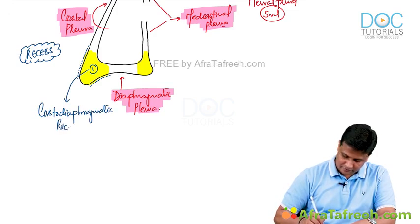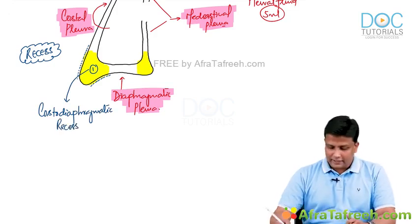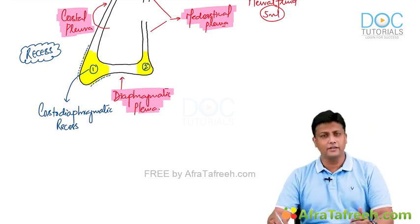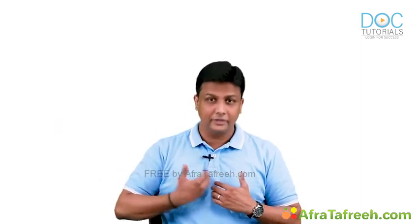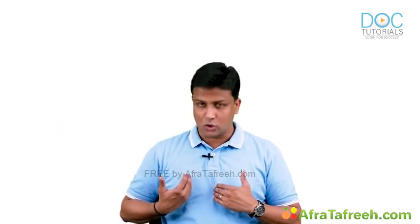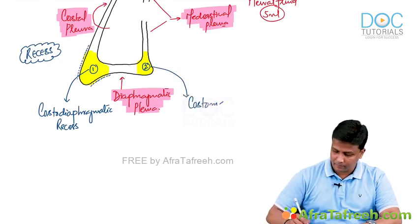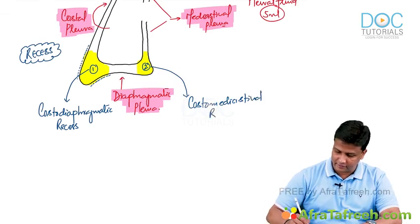The second recess is between the costal surface and the mediastinal surface, so it is referred to as the costomediastinal recess. So there are two types of recess in the pleura: the costodiaphragmatic recess and the costomediastinal recess.